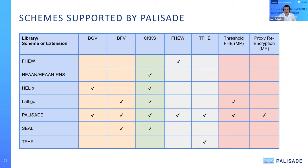As a summary, there are three approaches and three classes of schemes. For the Boolean approach: FHEW and TFHE schemes are supported in Palisade. For the integer approach: BGV and BFV are supported. For the approximate number approach: CKKS is supported. Within Palisade, you can choose which of the three approaches you want to use.